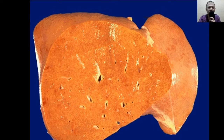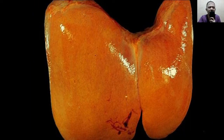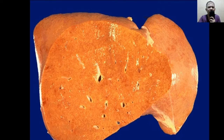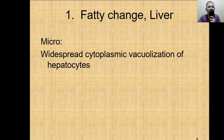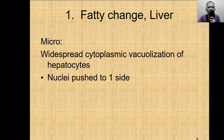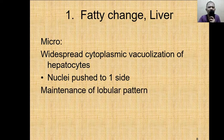The reason is not alcoholism but malnutrition — undernutrition. The liver here is greasy, fatty, slimy, and the cut surface is very greasy. The liver has undergone hepatomegaly. Microscopically, you see widespread cytoplasmic vacuolization of hepatocytes — that is what we call fatty change. The nuclei are pushed to one side because the lipid vacuole has occupied most of the hepatocyte cytoplasm. There is still maintenance of the lobular pattern.